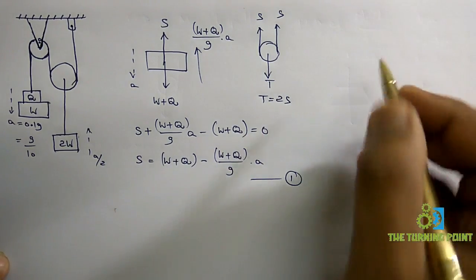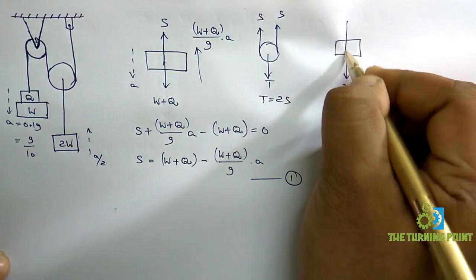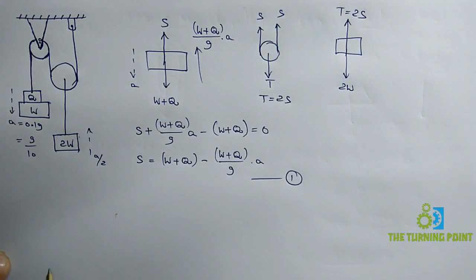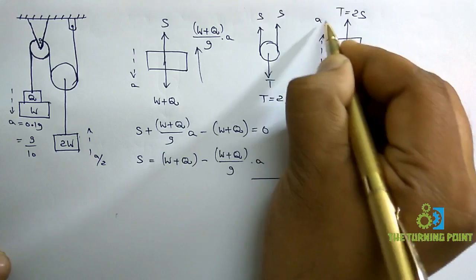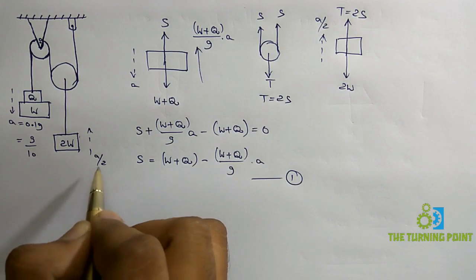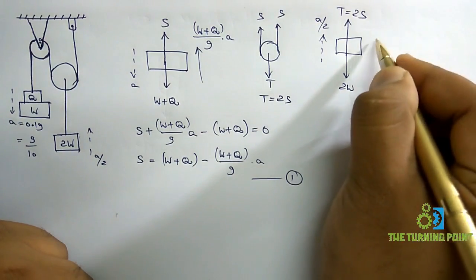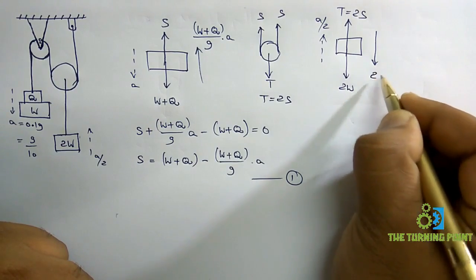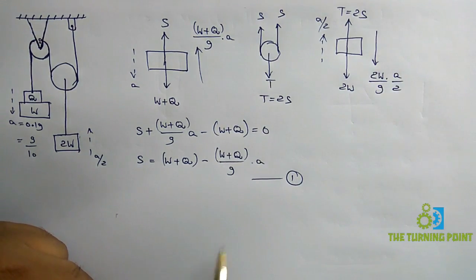Now let us consider the free body diagram of the 2W block. Weight 2W acts vertically downwards. Along the rope there is tensile force T, which equals 2S. It has an upward acceleration of A by 2 — since for a movable pulley attachment, if one side has acceleration A, the other has acceleration A/2 in the opposite direction. The inertia force is 2W/G times A/2.